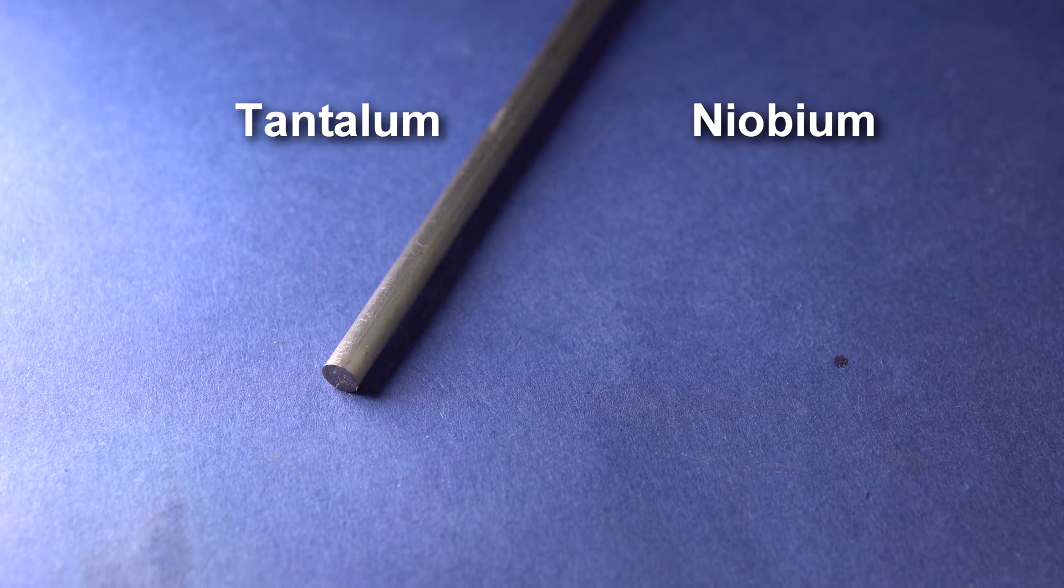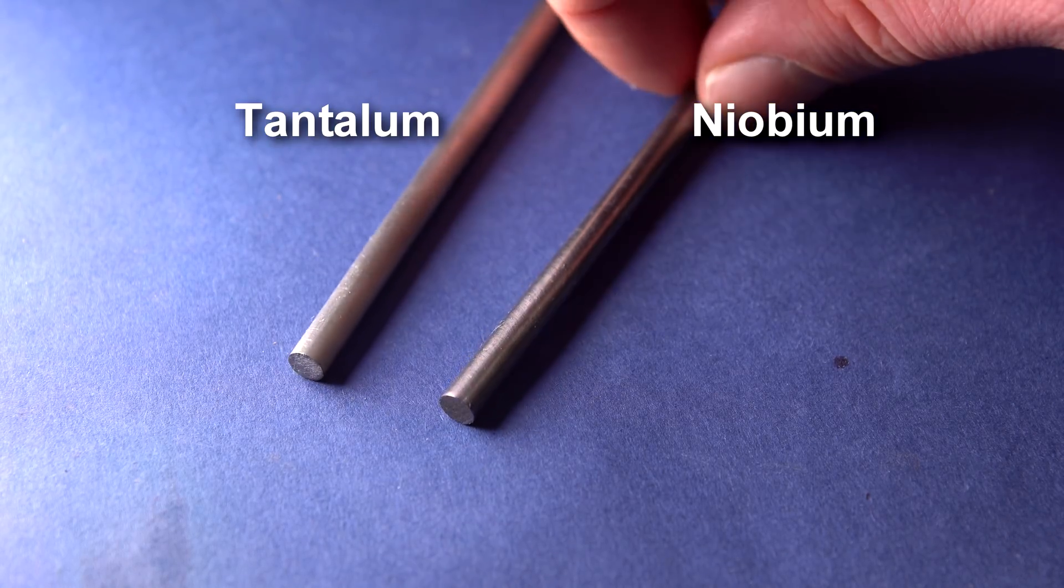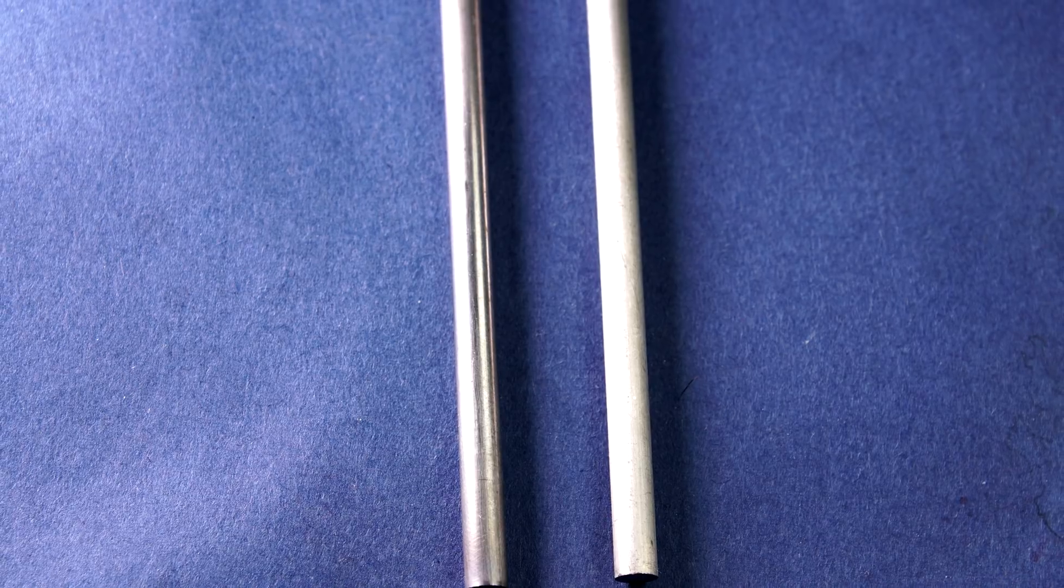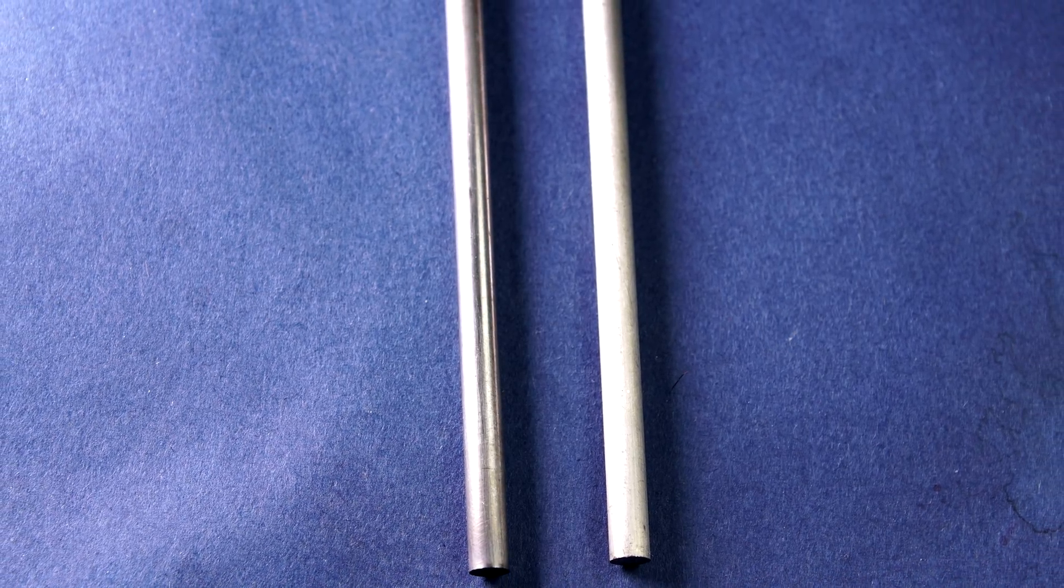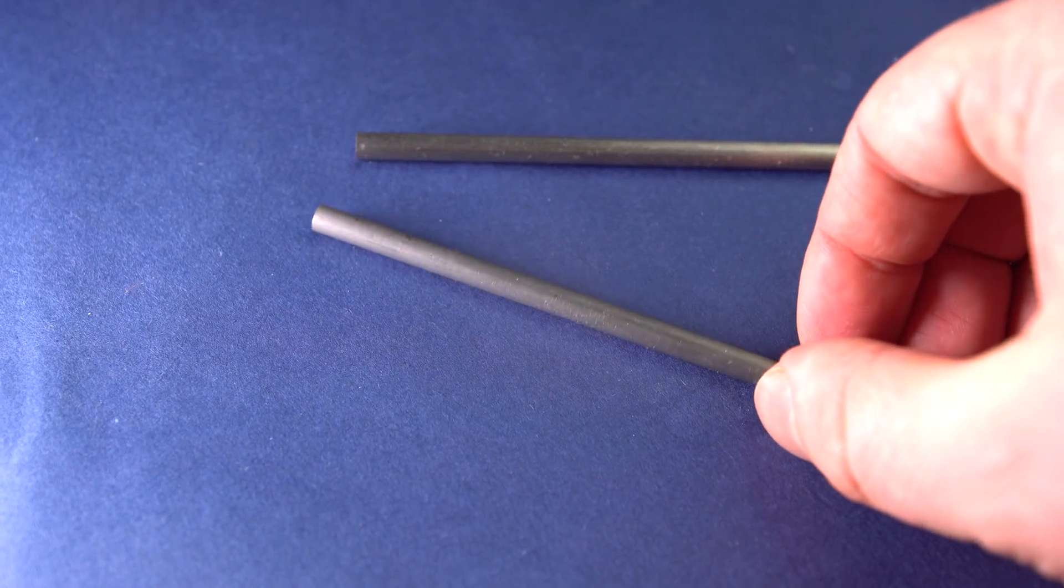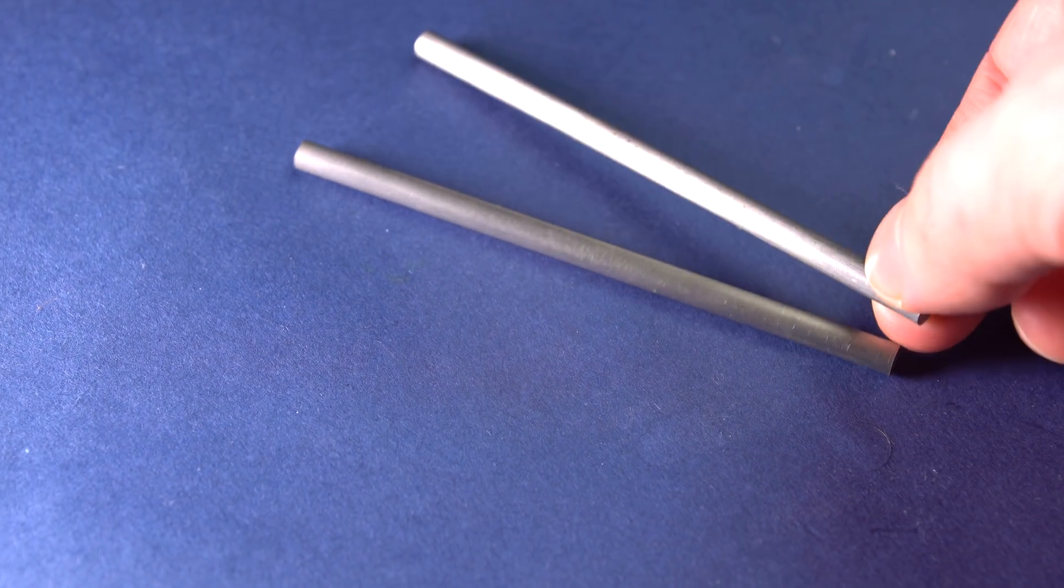If you compare its appearance with tantalum, then you can immediately see the difference in that tantalum has a more shiny surface. Though it might be just the way they produce these rods. Also, niobium is about three times cheaper than tantalum.